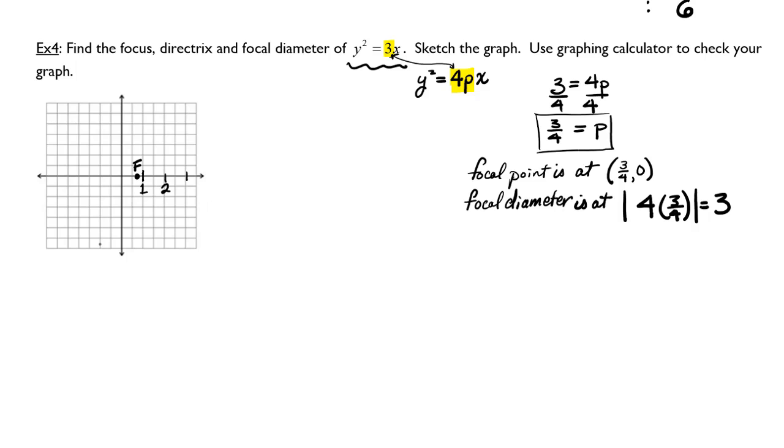And the focal diameter is 3, and the vertex is at 0, 0, which means the directrix has to be on the other side, which will be at negative 3 fourths. And now I can fill in the remaining portion. If I go 1, 2, 3.